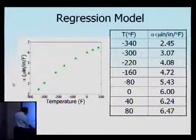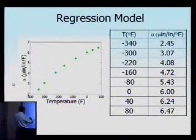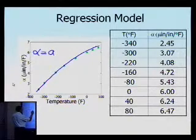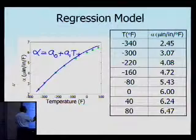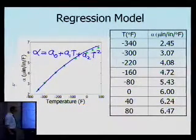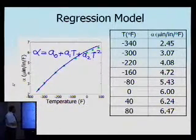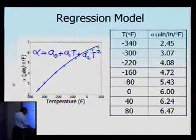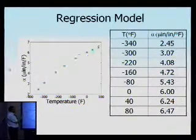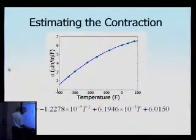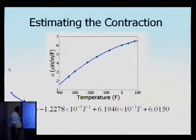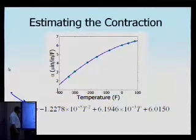What we are going to do is take the data given to us and regress it to a second-order polynomial. The second-order polynomial we are fitting is a₀ + a₁t + a₂t². We use this second-order polynomial to regress the eight data points given to us, and then we can integrate under this curve to find the change in diameter. How we obtain the second-order polynomial regression model is shown in a separate segment. This is the resulting alpha as a function of temperature.